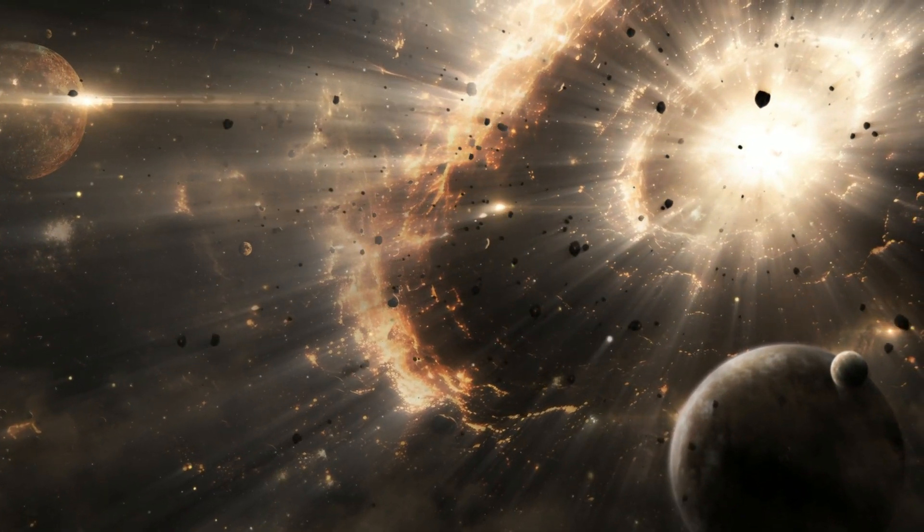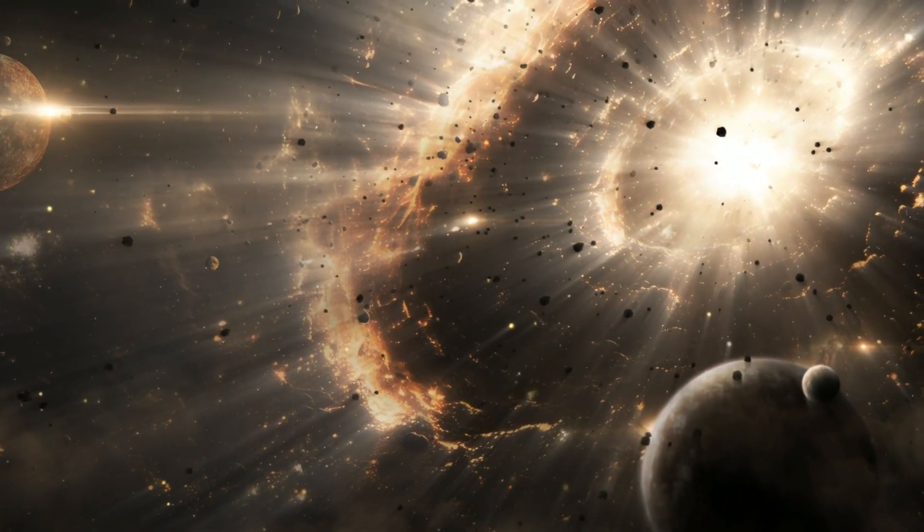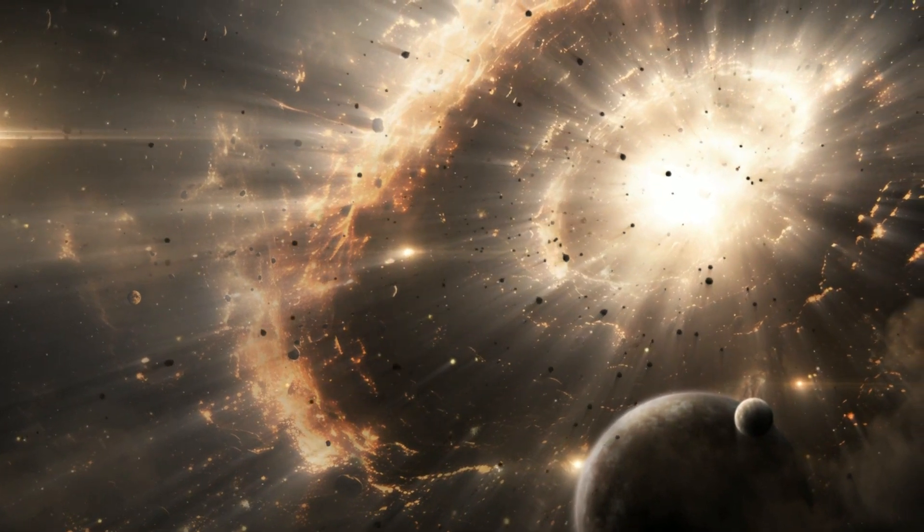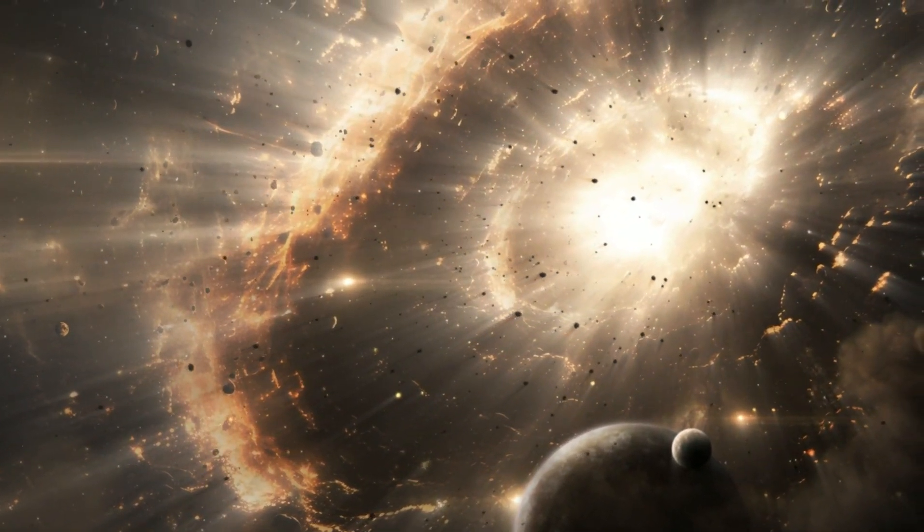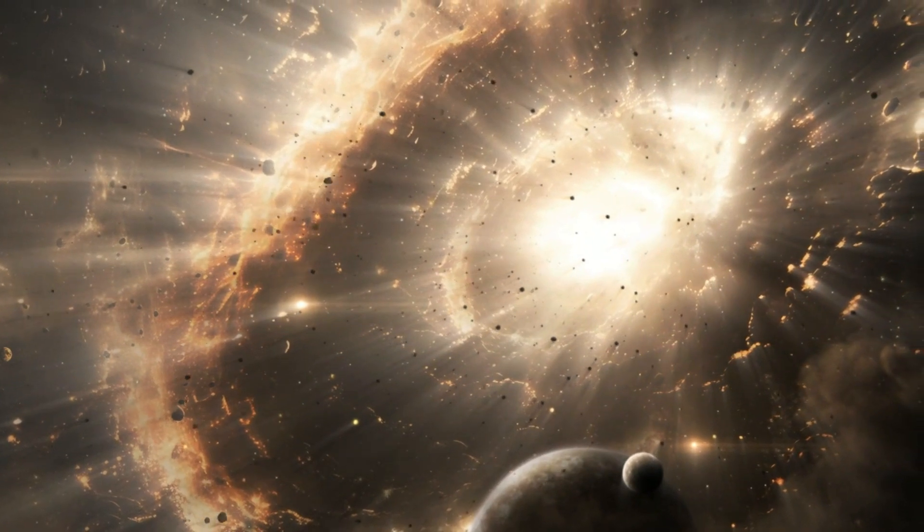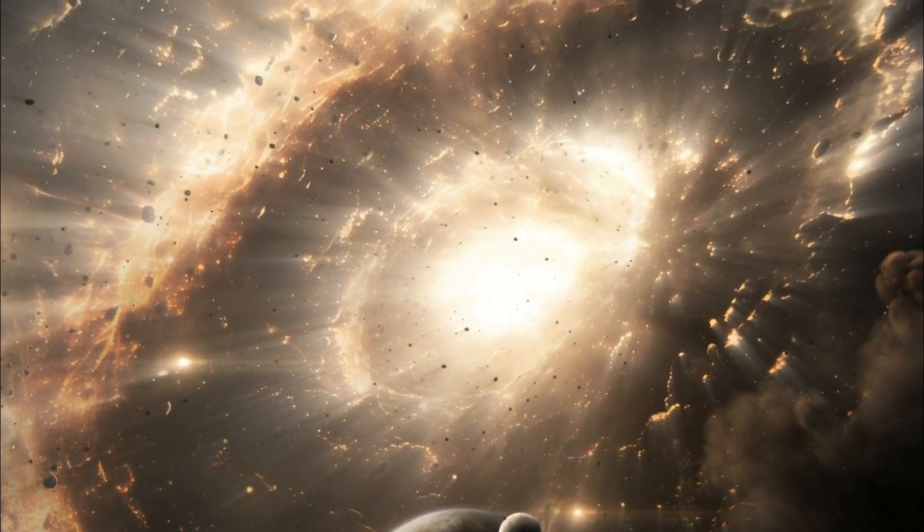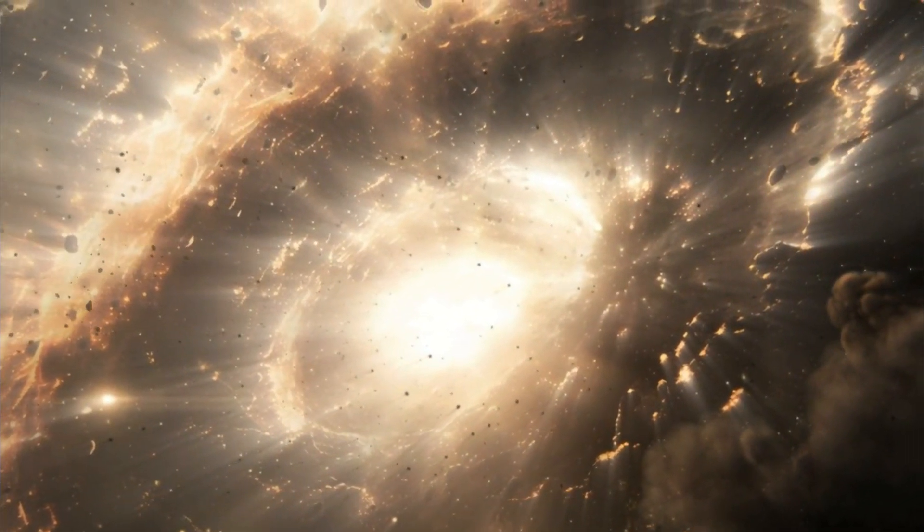Stars like Betelgeuse have relatively short lives. Even though it's only about 8 million years old, it's already nearing the end of its life cycle. When it does go supernova, it will mark the dramatic end of a star's evolution, creating heavy elements like iron, and releasing vast amounts of energy into space.